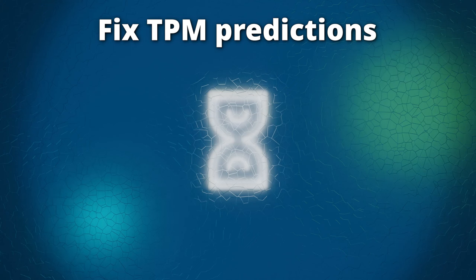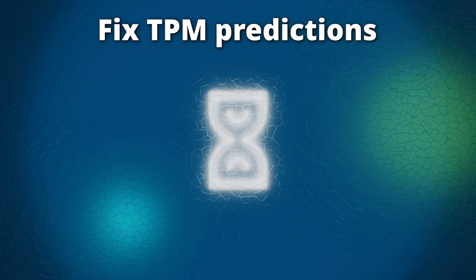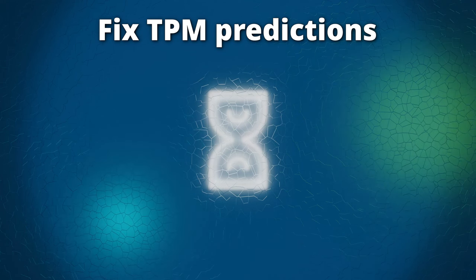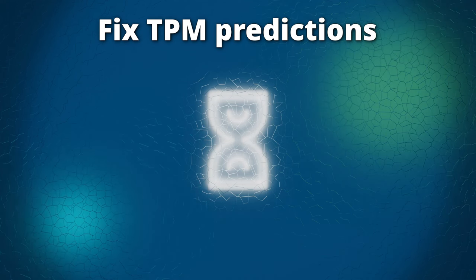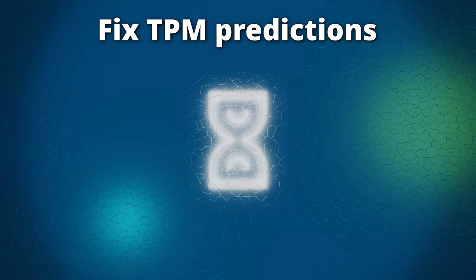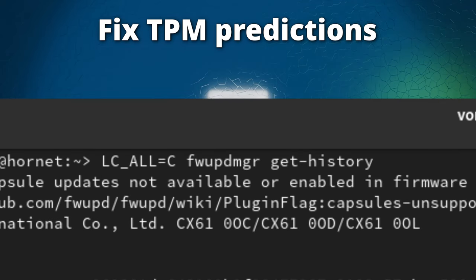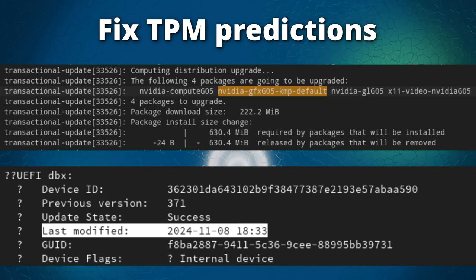Also note that GNOME Software sometimes performs firmware updates on its own and may update the secure boot definitions of your BIOS, which would also invalidate the TPM predictions. Therefore, if EON asks for a recovery key or password again, check the transactional-update logs using sudo journalctl -u transactional-update -r and check firmware history using fwupdmgr get-history. If either indicates an update occurred, re-enroll the TPM as explained earlier.